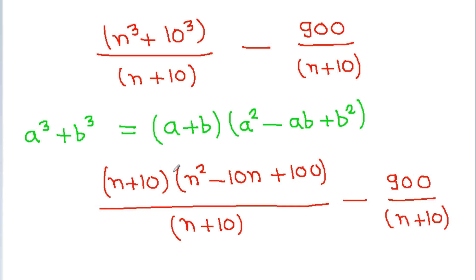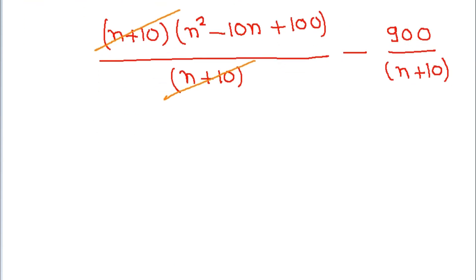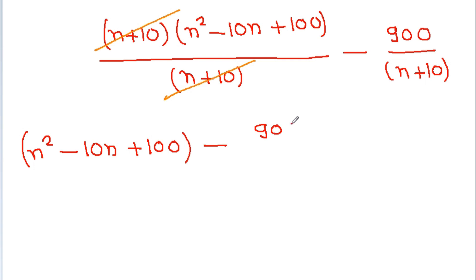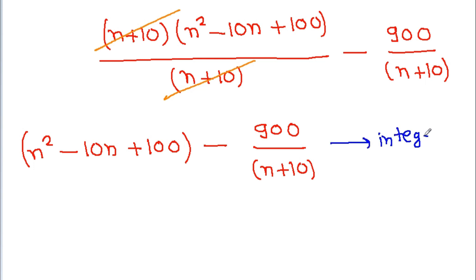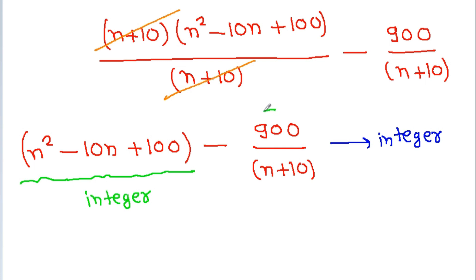Now, the (n + 10) terms cancel, and we get n² - 10n + 100 - 900 / (n + 10). For this to be an integer, since n² - 10n + 100 is always an integer for every value of n, it follows that 900 / (n + 10) must also be an integer.